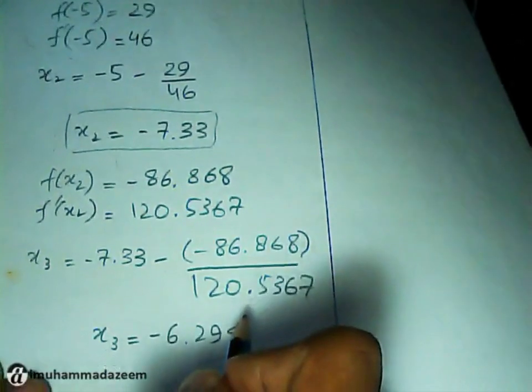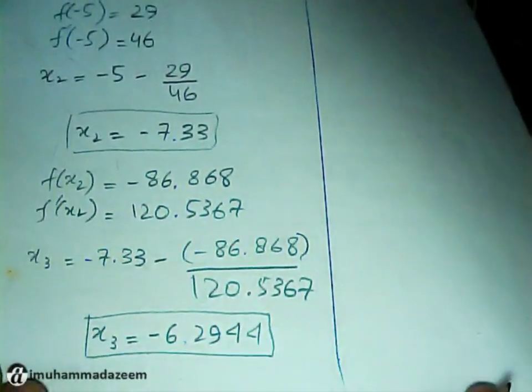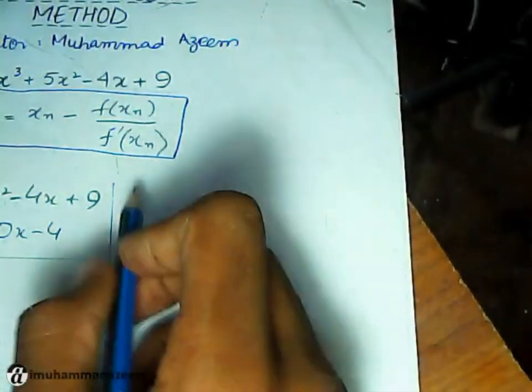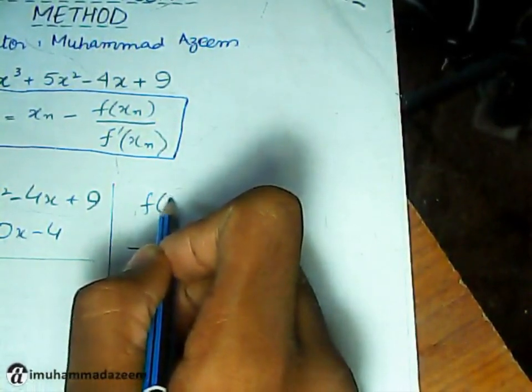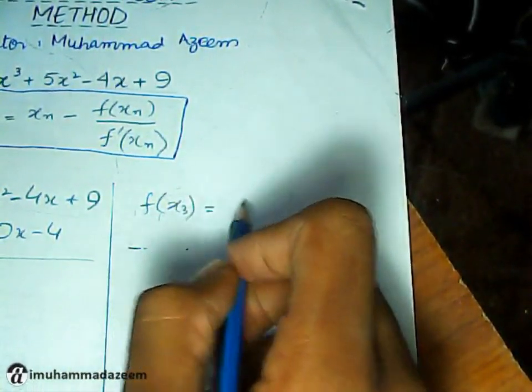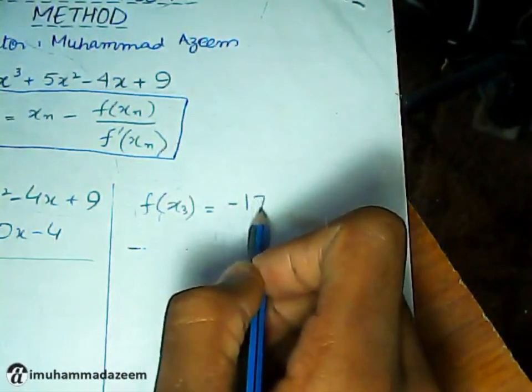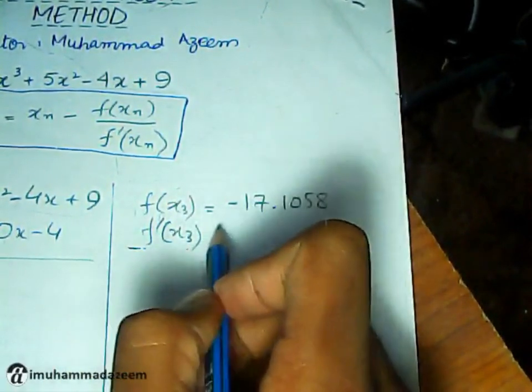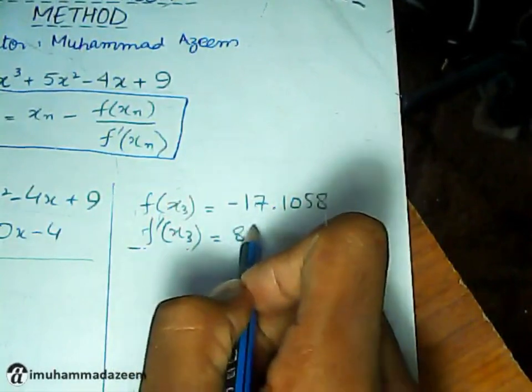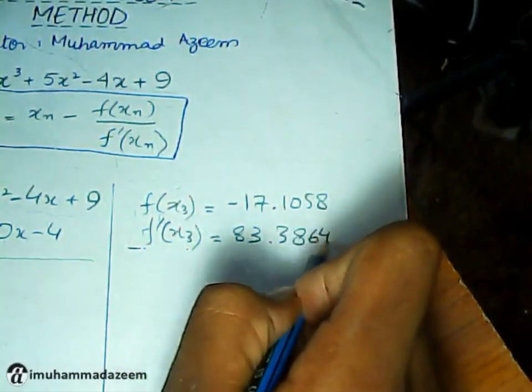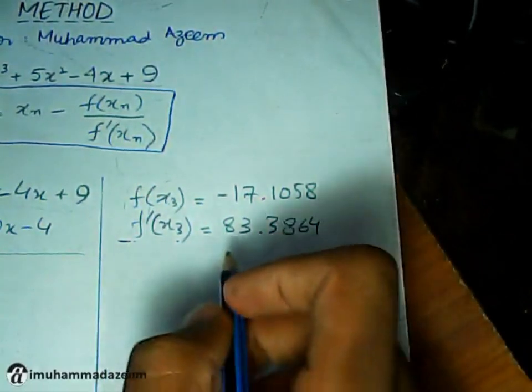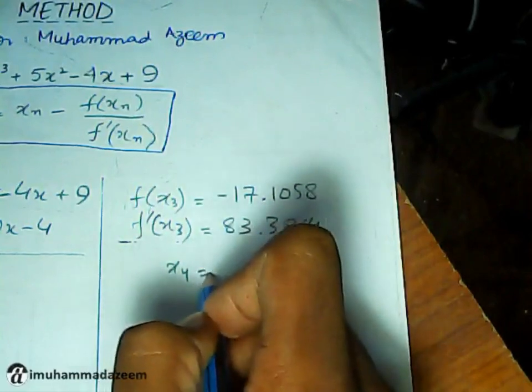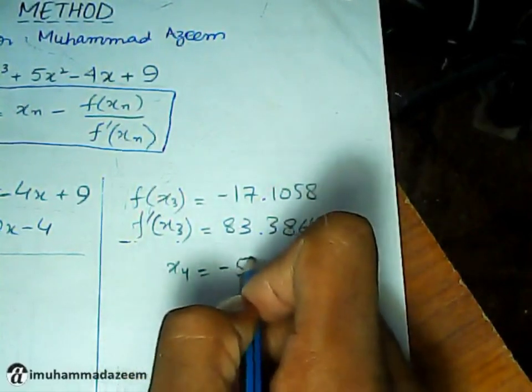So this step goes on. We have to find the next values. The next iteration is going to be for X₃. f(X₃) is going to be minus 17.1058. f prime of X₃ is going to be 83.3864. So the X₄ comes out to be X₄ equals minus 5.9649.